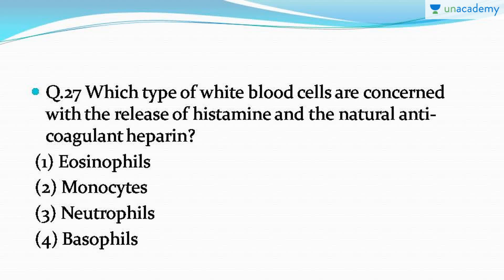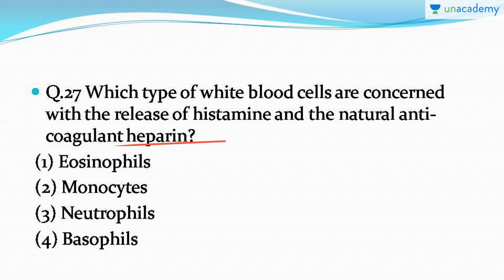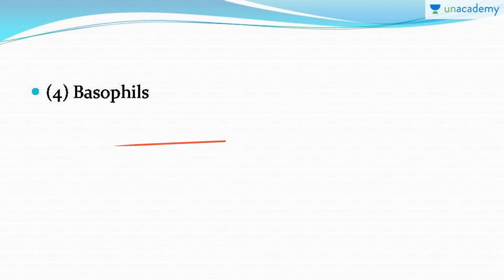The next question asks which type of white blood cells are concerned with the release of histamine. Histamine is actually a vasodilator, and heparin is a natural anticoagulant. You have to tell which type of WBC releases histamine and heparin. The correct answer is option number four: basophils. Basophils release histamine as well as heparin, and they are also the WBC found in the least number in our body.